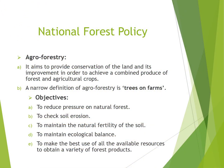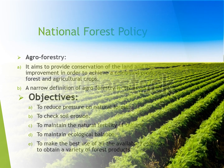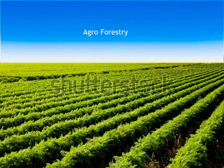Now let's talk about agroforestry. It aims to provide conservation of land and its improvement in order to achieve a combined produce of forest and agricultural crops. A narrow definition of agroforestry is 'trees on farms.' Its objectives include: to reduce pressure on natural forests, to check soil erosion, to maintain the natural fertility of the soil, to maintain ecological balance, to make the best use of available resources, and to obtain a variety of forest products. This intentional combination of agriculture and forestry has varied benefits, including increased biodiversity and reduced erosion.